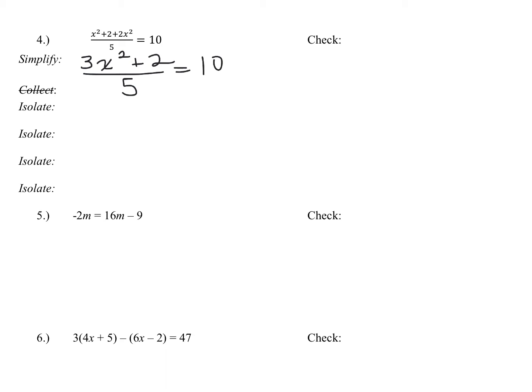Now if you look, I've crossed off collect. I crossed off collect because you don't have any variables to collect because there are no variables on both sides of the equal sign.